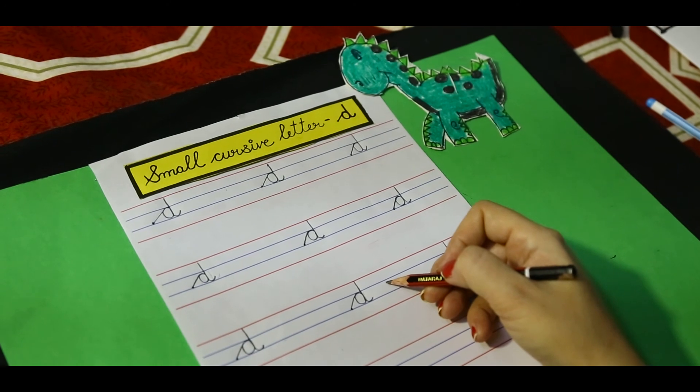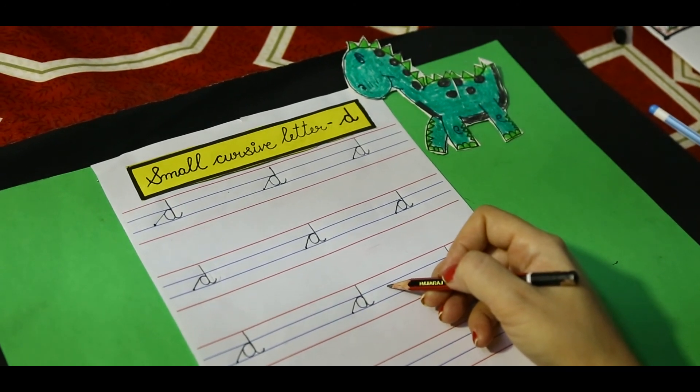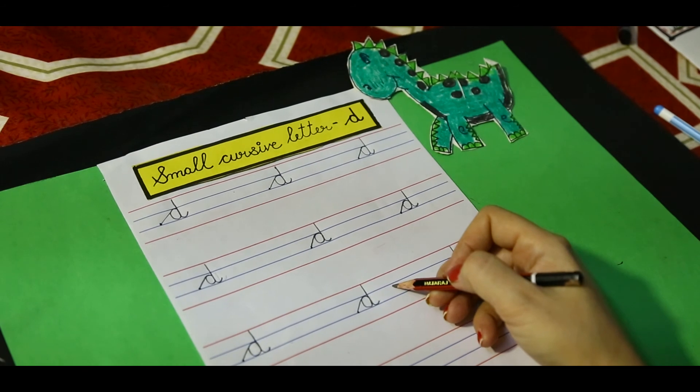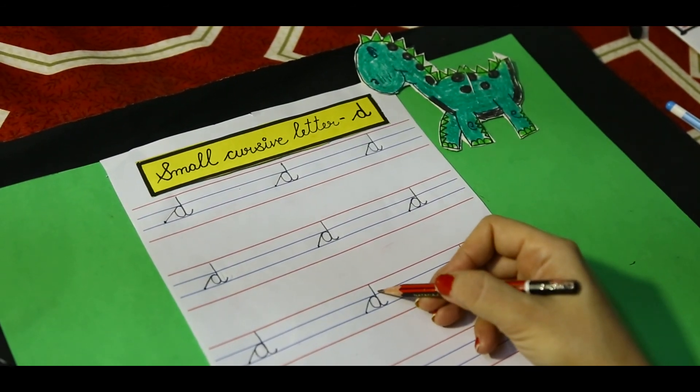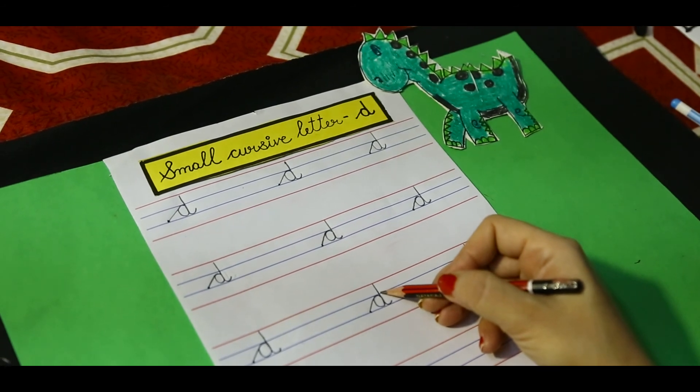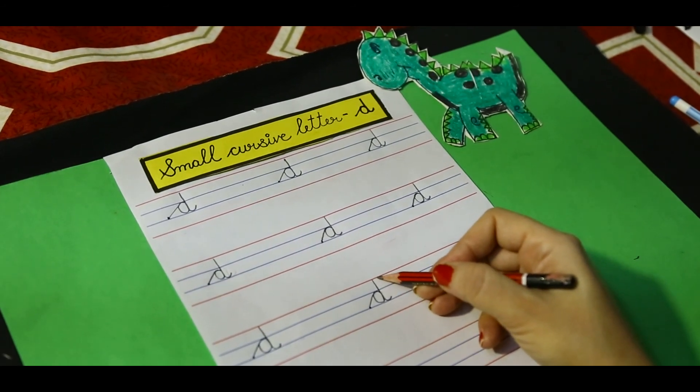Did you notice the difference between small cursive A and small cursive D? While making small cursive D, we have to touch the top red line.